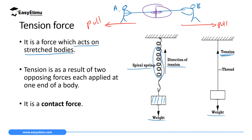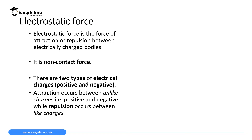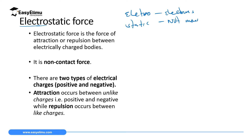For tension force to occur, the two ends must be in contact — like A and B both holding the same rope — so tension force is a contact force. Another category of forces is electrostatic force. In electrostatics we study electrons which are not moving, because the word 'electrostatics' comes from 'electro' meaning electrons and 'static' meaning not moving.